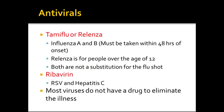Other antivirals: Tamiflu and Relenza are used for influenza A and B and must be taken within 48 hours of onset, otherwise they are minimally effective. This medication is taken to shorten the period of flu-like symptoms. If not taken within 48 hours, the period of influenza is not really shortened and the medication is not very effective.